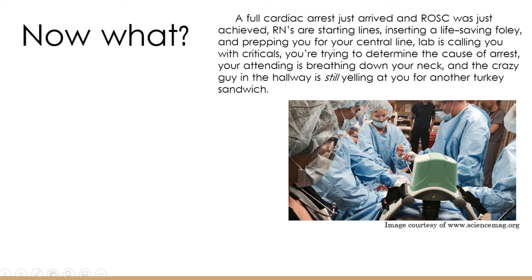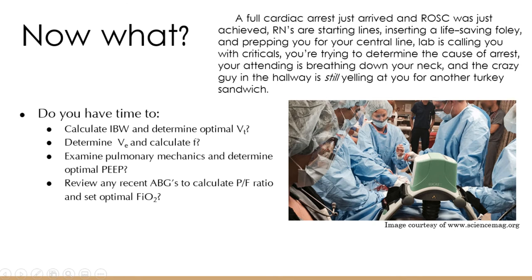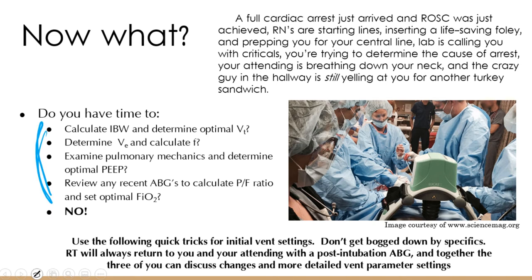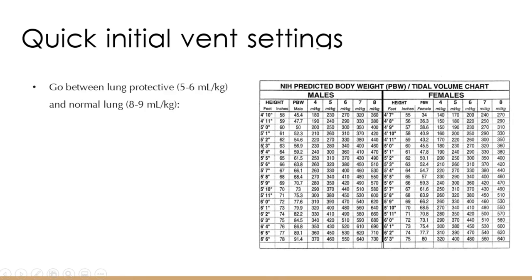In a full cardiac arrest with ROSC just achieved, with nurses starting lines, lab calling with criticals, and your attending on your neck — you don't have time for detailed calculations. The following slides cover quick tricks for initial vent settings. For most adults, 7 mL/kg is a safe starting point — it's lung protective and right in the middle of normal. Average male height is 5'9", so that puts you around 500 mL tidal volume. That's why people often just say 500 mL as a default.